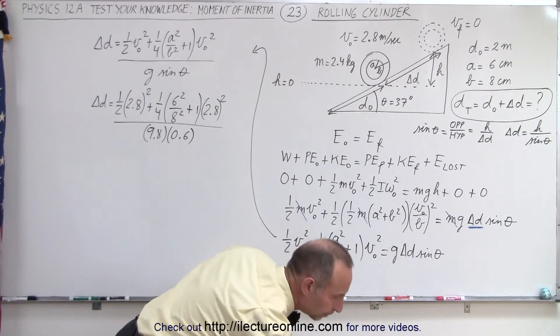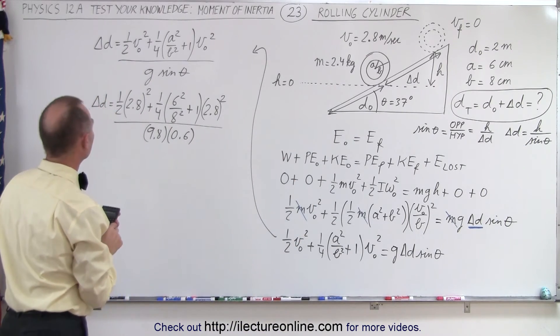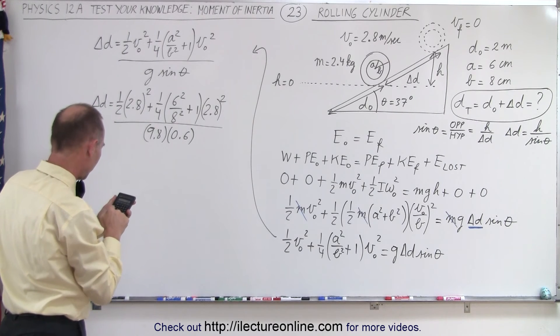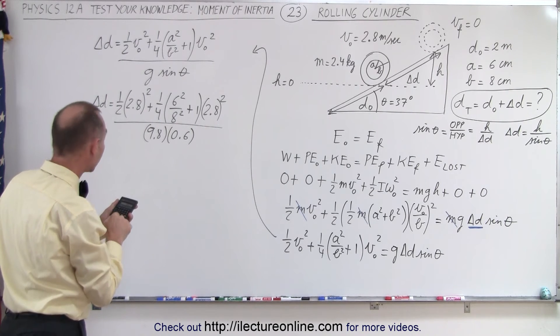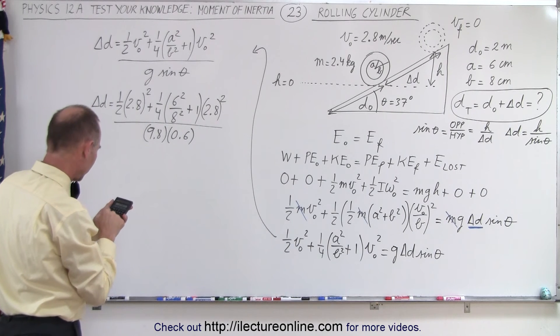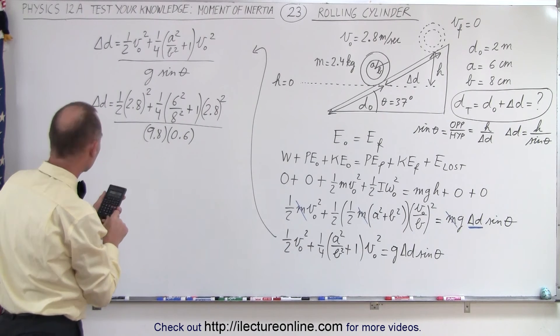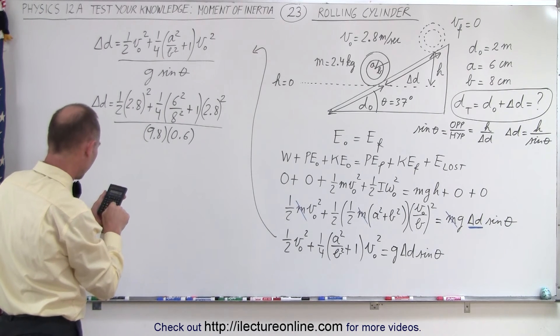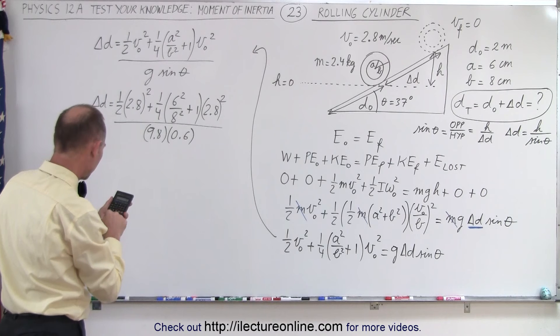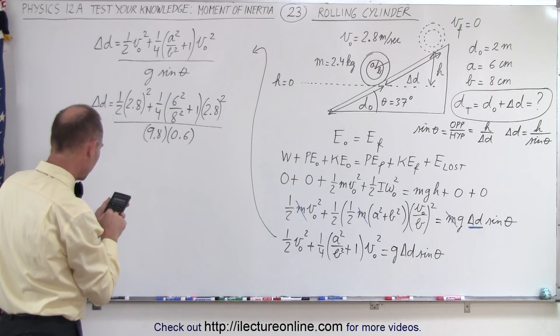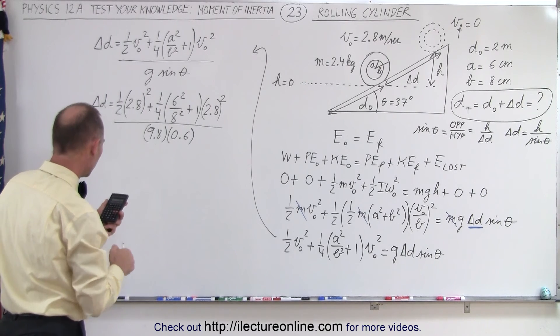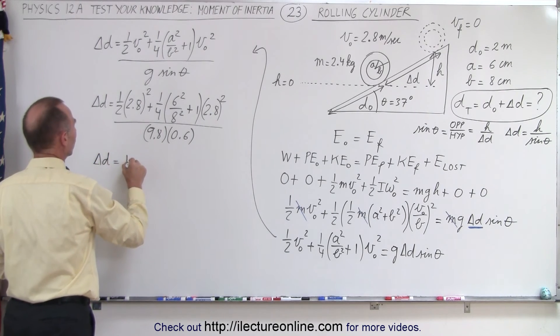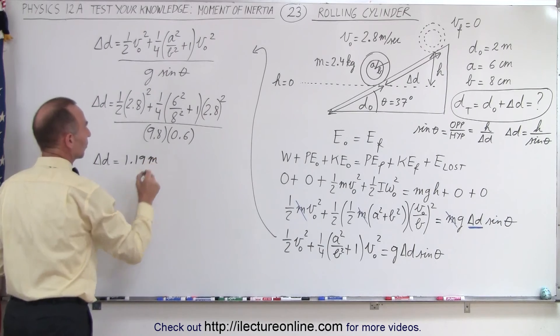Let's see what that's all equal to. So we have, starting with that, we have 36 divided by 64 plus one. So, divide by 4 times 2.8 squared plus 2.8 squared divided by 2 equals, and then divide by 9.8 and divide by 0.6 equals, and we end up at 1.19.